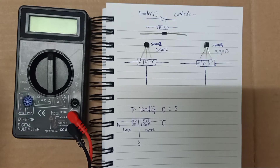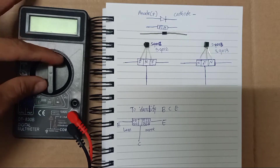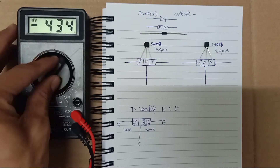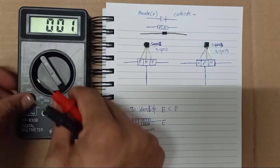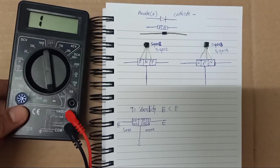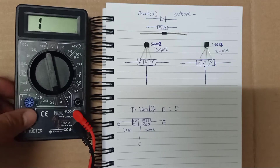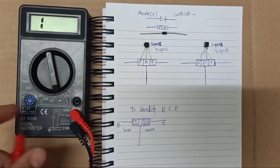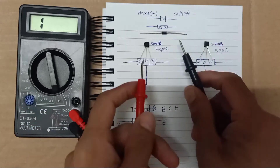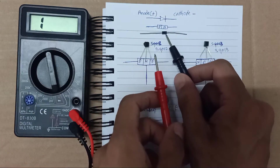To identify a transistor as PNP or NPN, first you have to know diode testing using a digital multimeter. You put it to diode mode — this is the diode mode — and this one is a diode.